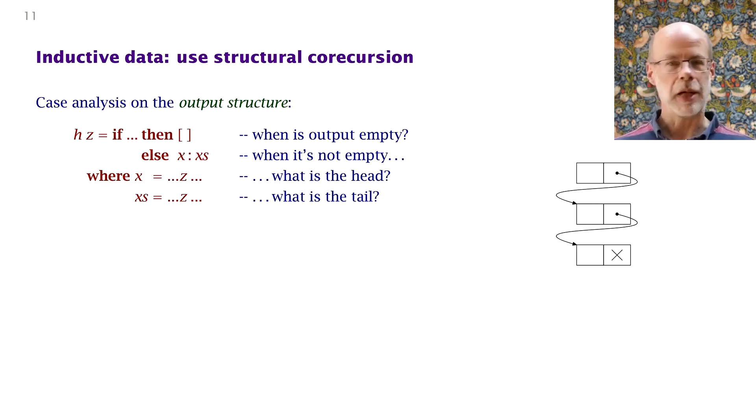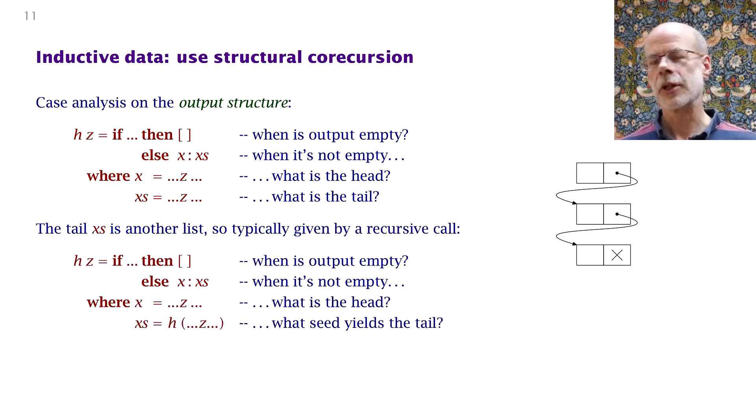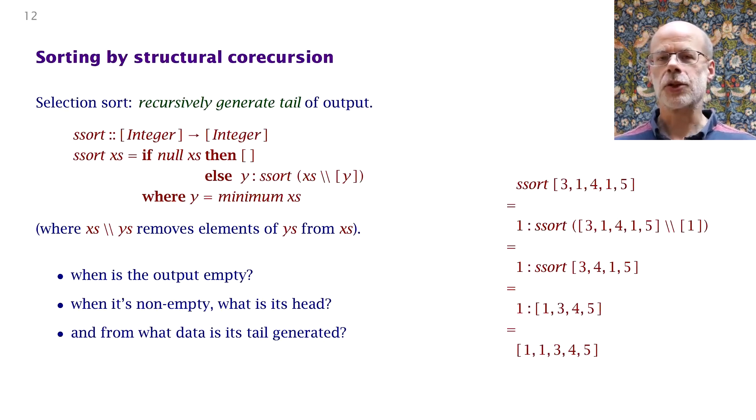And then inducted data. So again, this is a list, but now you're producing one, not consuming one. What are you going to do? Well, a list is either empty or it's not, so you have a case analysis. Under some circumstances you produce the empty list and otherwise you produce a non-empty one. And if you produce a non-empty list, of course you have to produce its head X and its tail X's. But more than that, the tail is another list, so you could do that by making a recursive call. So a more refined pattern, which is often but not always applicable, something to consider, is the tail of the list X's is the result of a recursive call on some other input, of course, generated somehow from Z. So your only question now is what is the data that I should give to the recursive call? What is the seed from which I should grow the tail of the result?